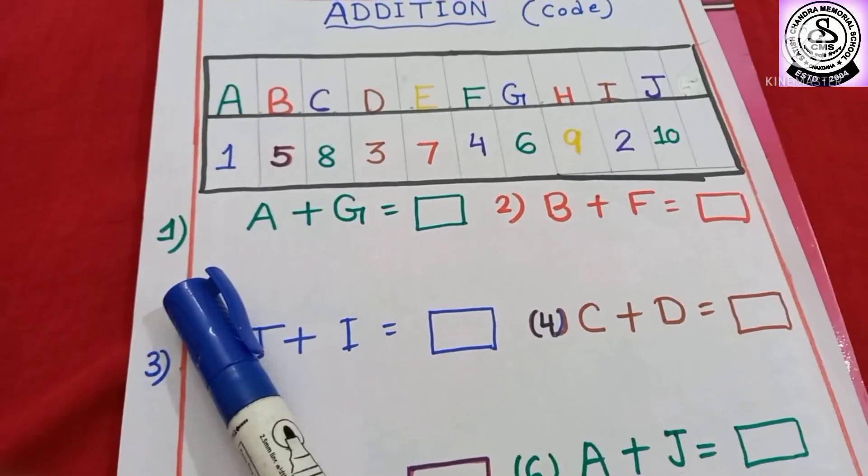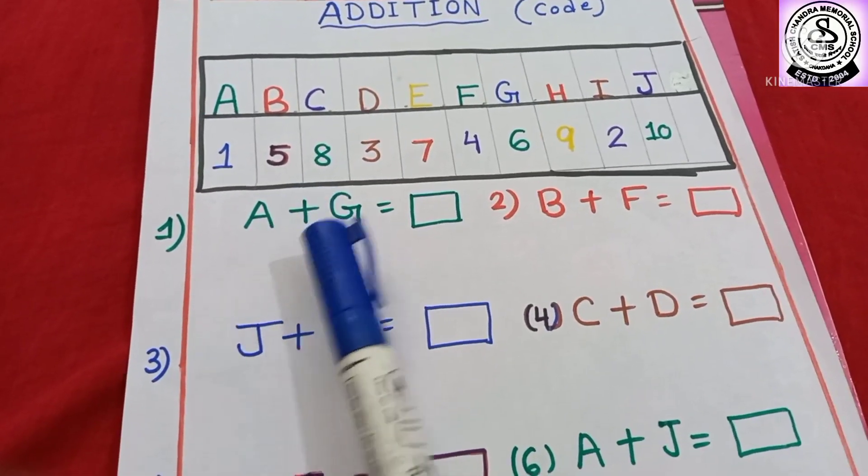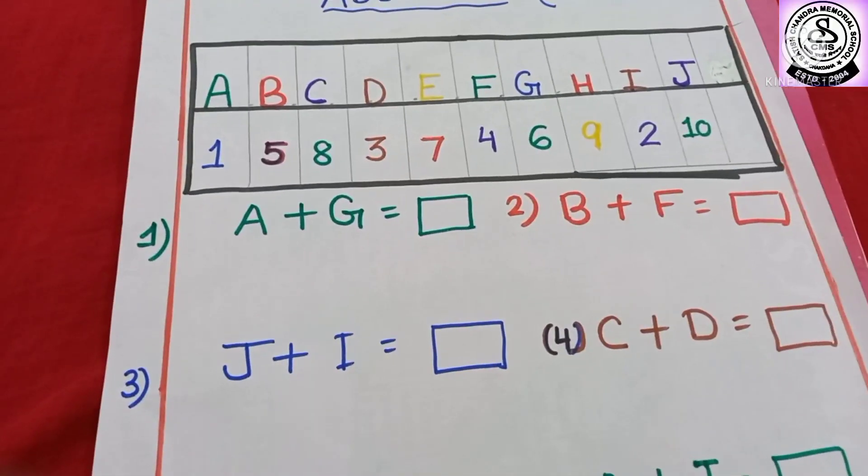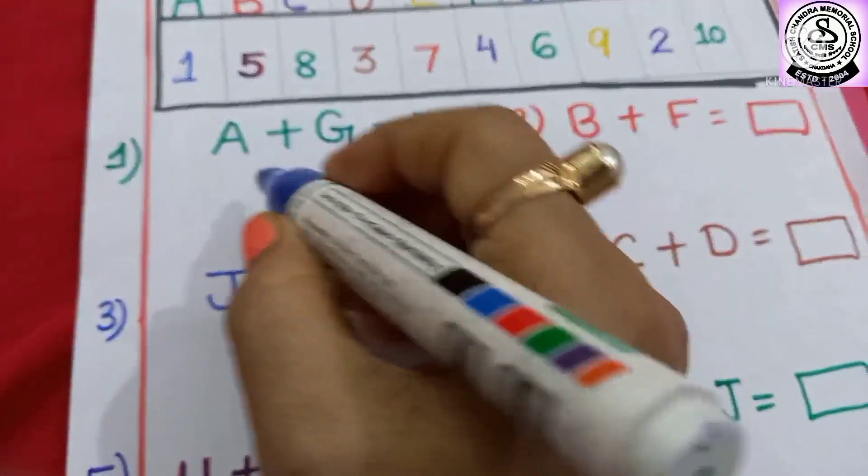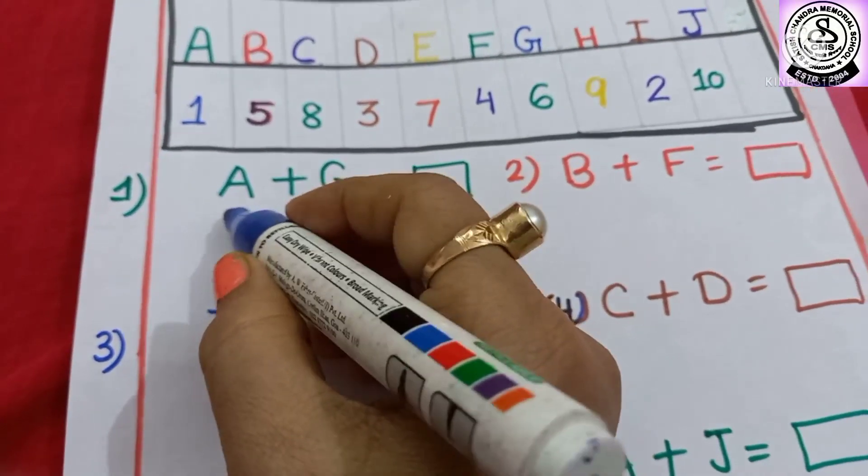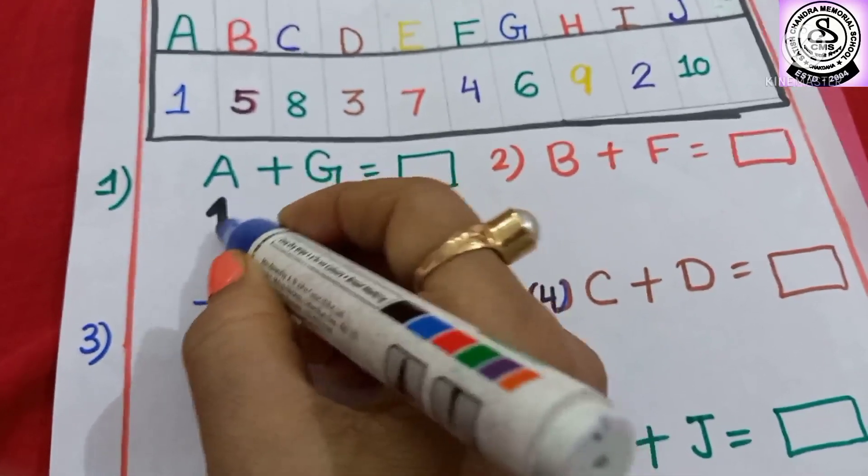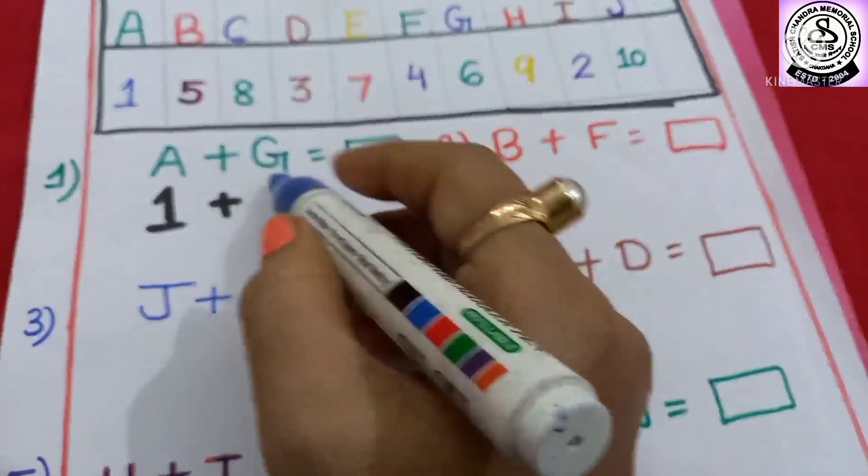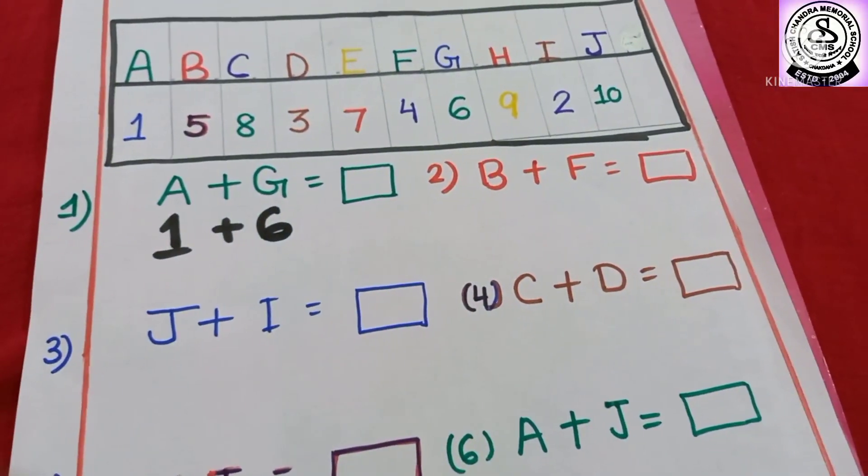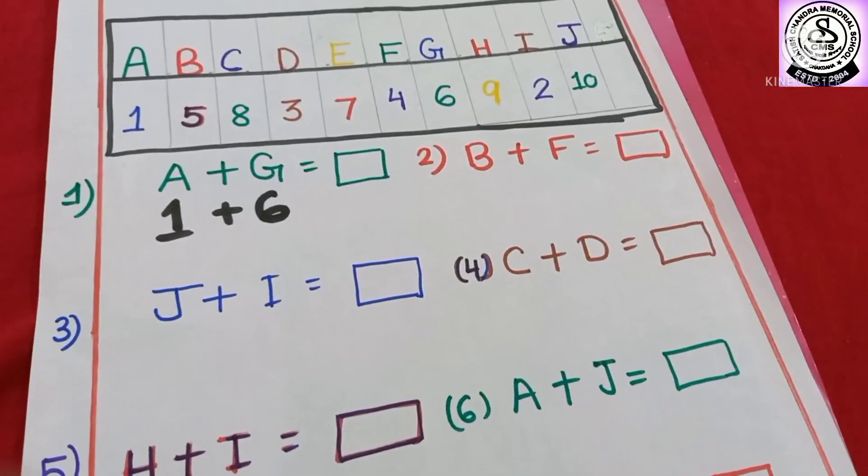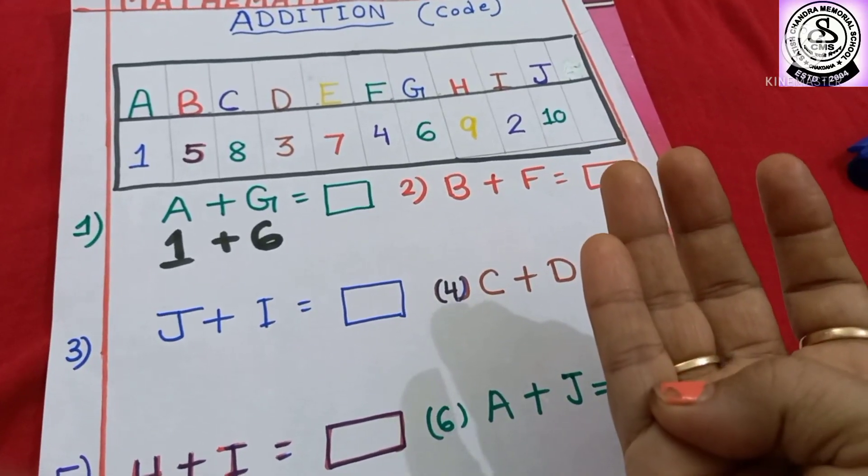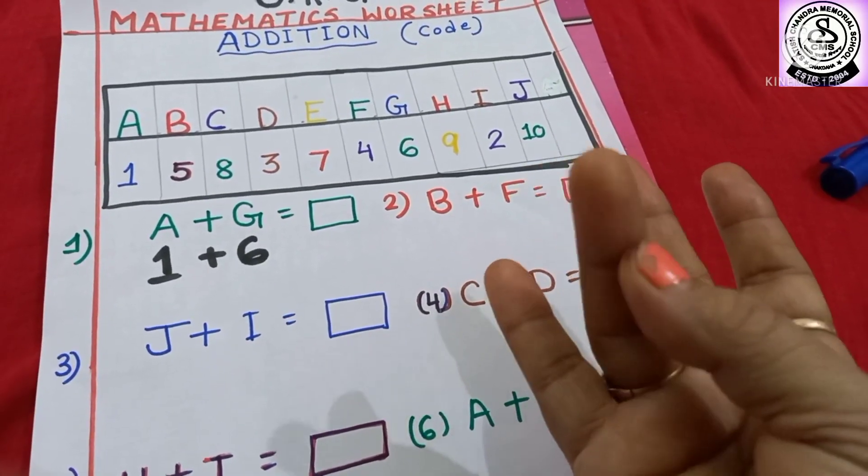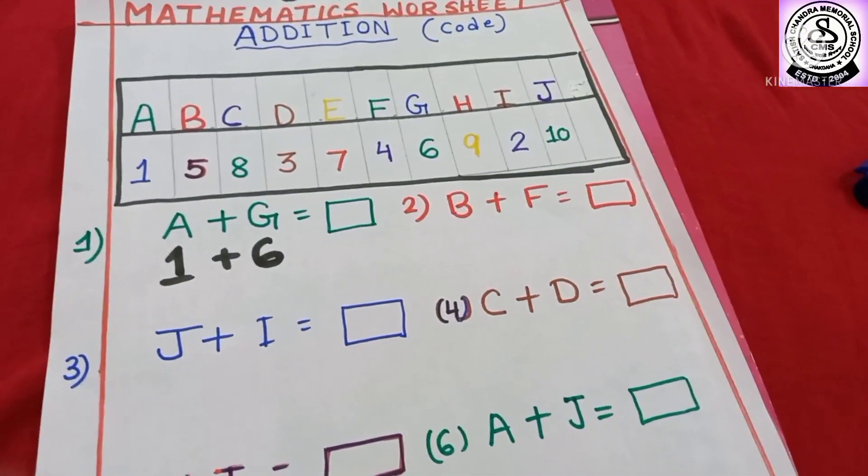So, what you have to do? Here you can see I have given some addition. A plus G. A means 1, and G means 6. So, 1 plus 6. After 1 you have to count 6: 2, 3, 4, 5, 6, 7. So, 1 plus 6 is equal to 7.